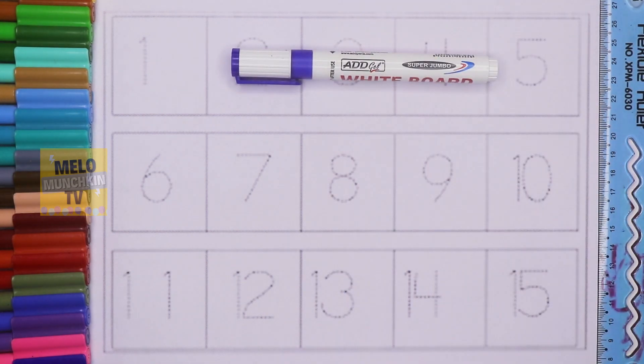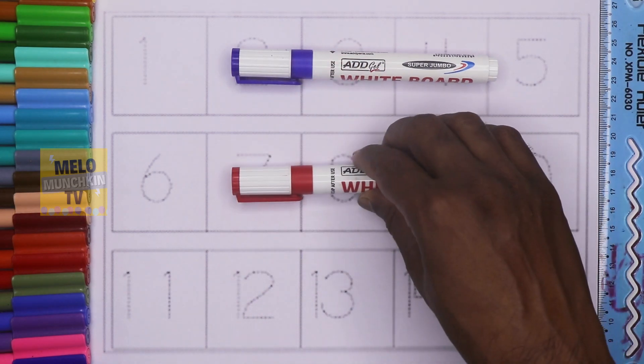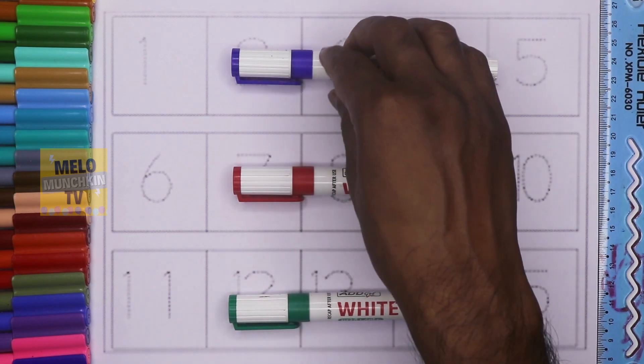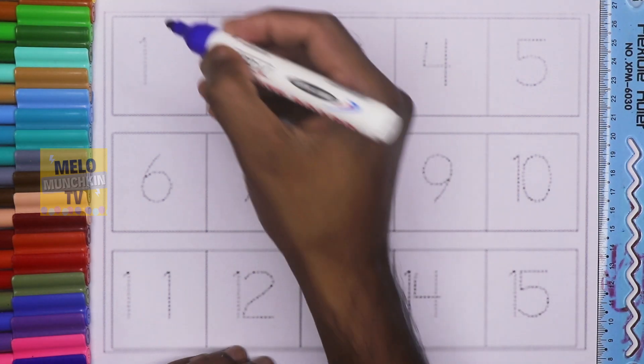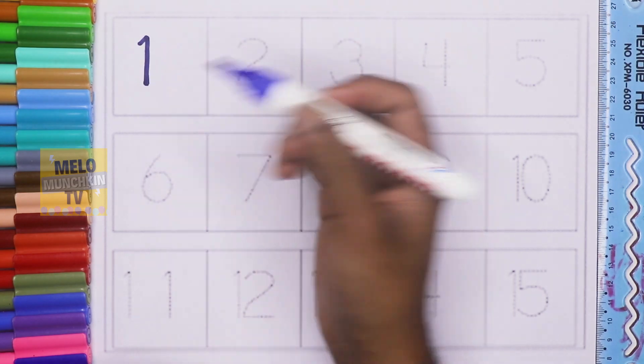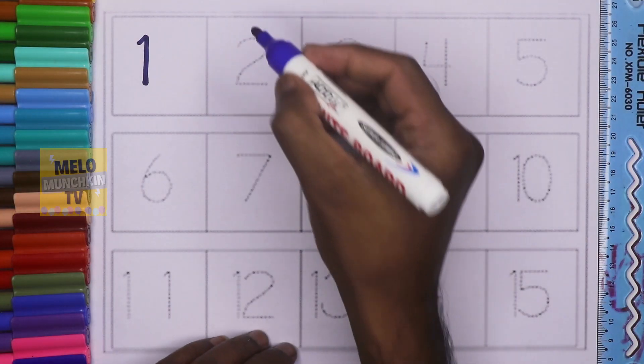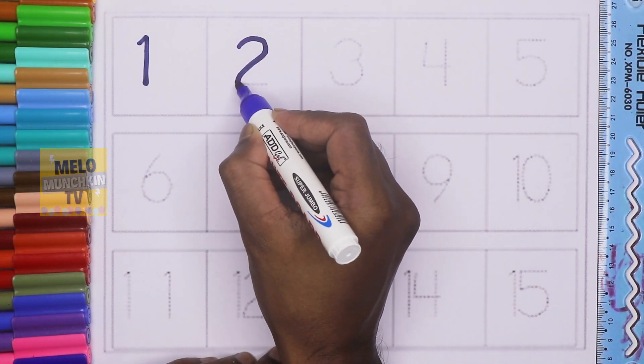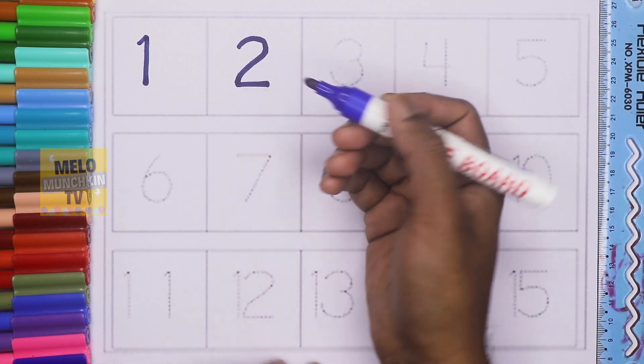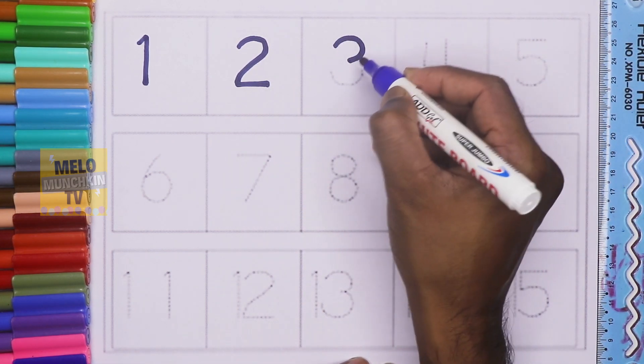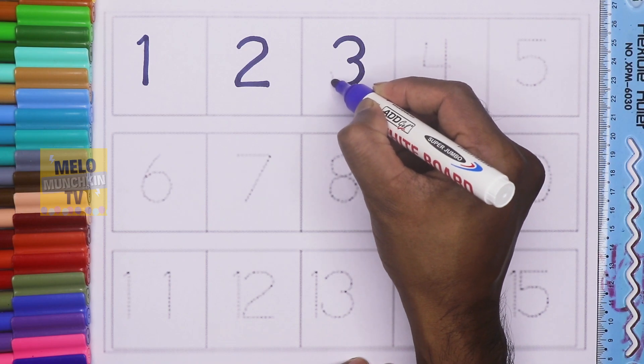This is number 1, O-N-E, 1, O-N-E, 1. This is number 2, T-W-O, 2, T-W-O, 2. This is number 3, T-H-R-E-E, 3, T-H-R-E-E, 3.